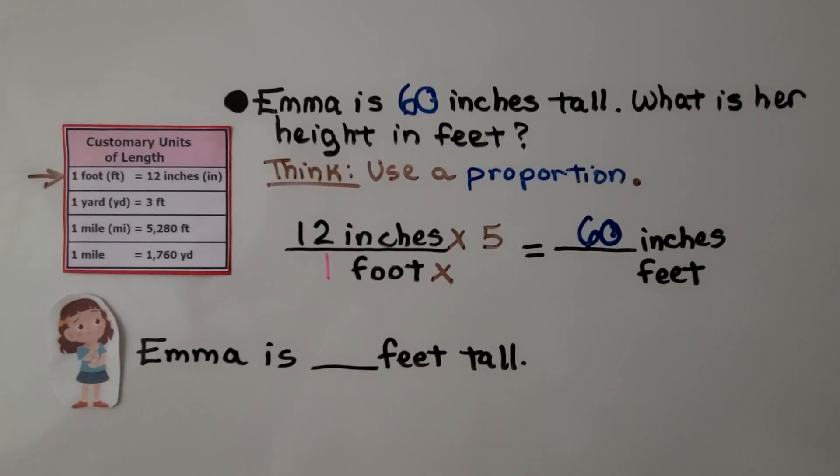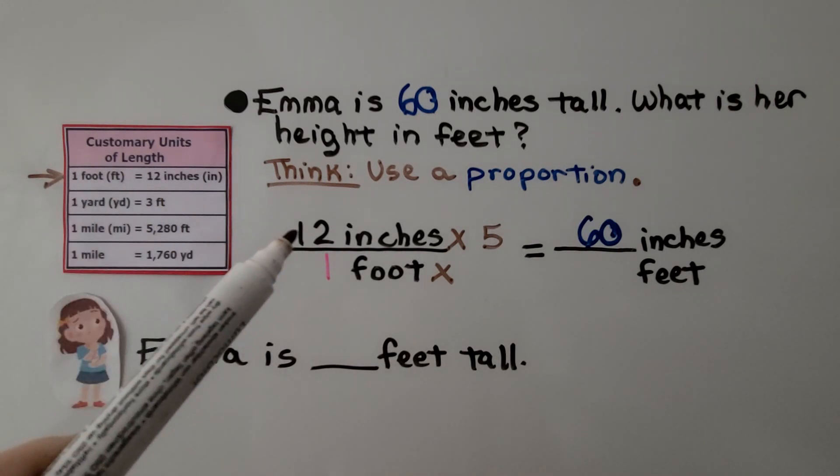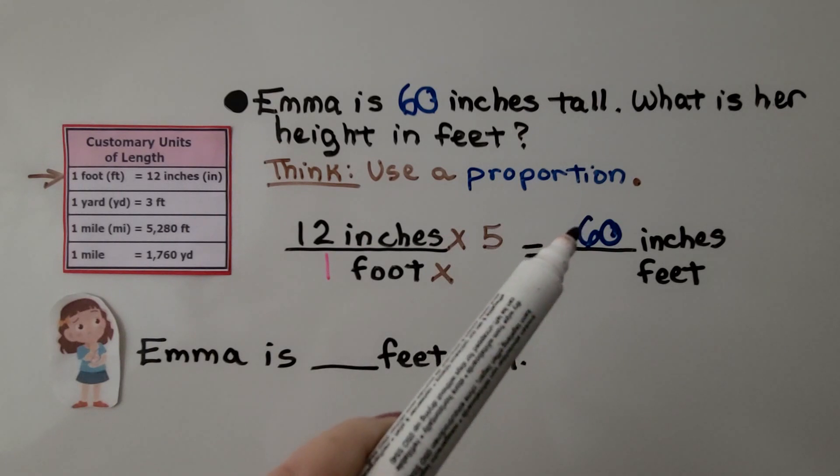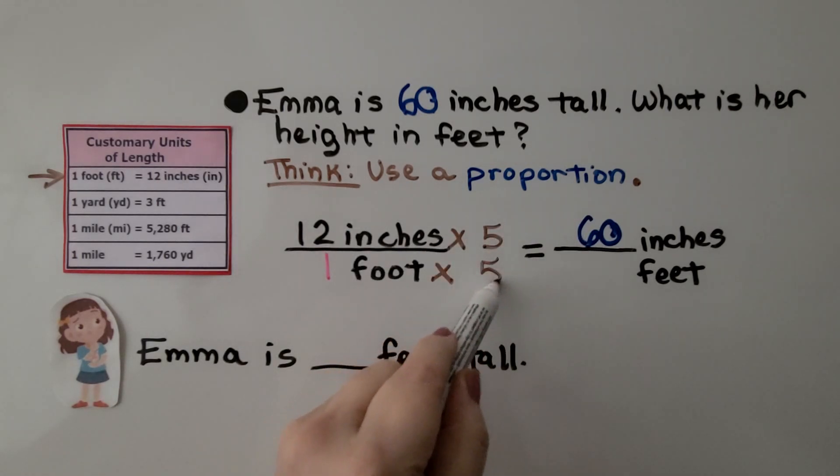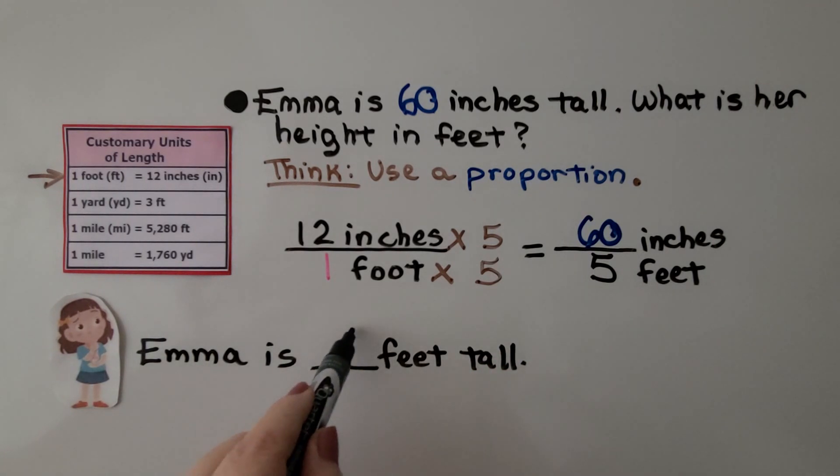Emma is 60 inches tall. What is her height in feet? We can use a proportion. There's 12 inches in one foot. We have our unit rate of 12 inches to one foot. We need to find feet for 60 inches. 12 times five is 60. We need to multiply one foot by five, which gives us five feet. So Emma is five feet tall.